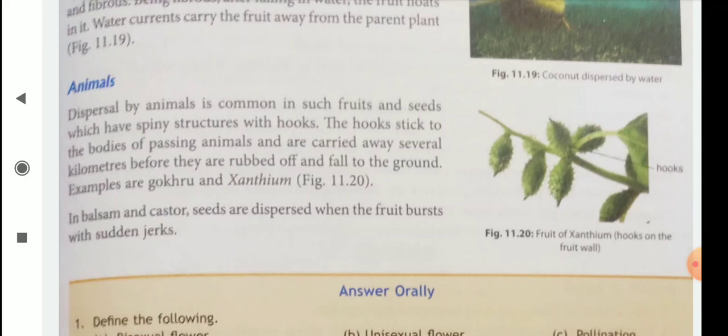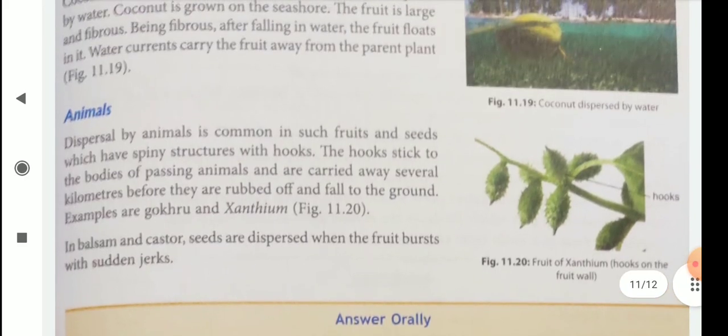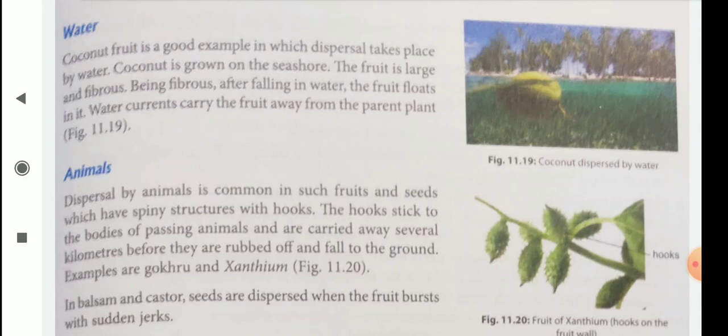Then, animals. Dispersal by animals is common in such fruits and seeds which have spiny structures with hooks. The hooks stick to the bodies of passing animals and are carried away several kilometers before they are rubbed off and fall to the ground. Examples are Gokru and Xanthium. In balsam and castor, seeds are dispersed when the fruit bursts with sudden jerks. In this way, seeds and fruits are transferred from one place to another, which is known as dispersal of fruits and seeds.